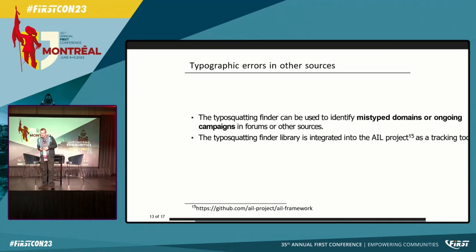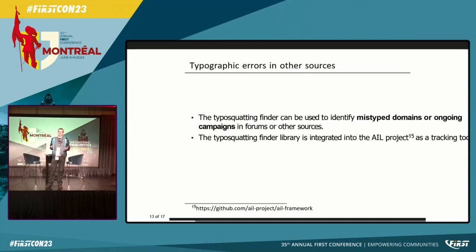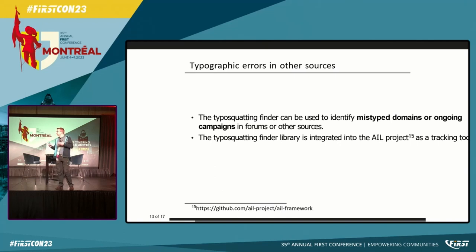Another interesting discovery: you can use this in a different way. If you have ongoing campaigns by threat actors, they sometimes talk about what they're doing on forums. Sometimes adversaries are mistyping a target — and you might miss such information. For example, you have a Russian-speaking actor talking about specific banks in Europe, but they're not French speakers so they mistype the name — not by purpose. What we discovered is the typosquatting library was able to find such things.